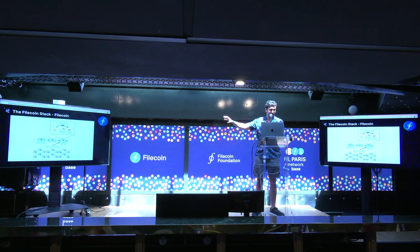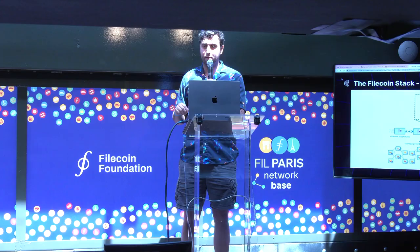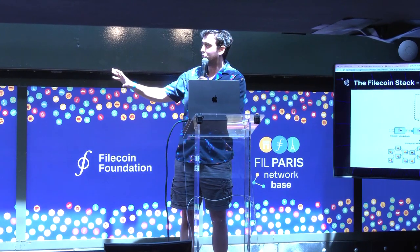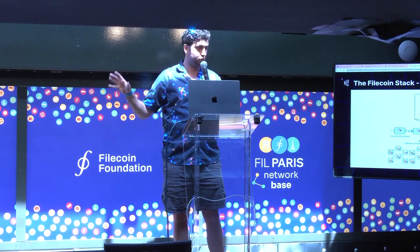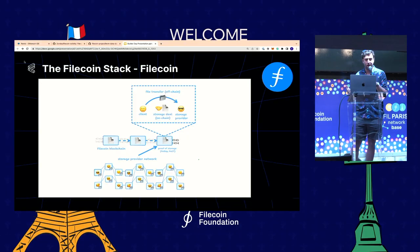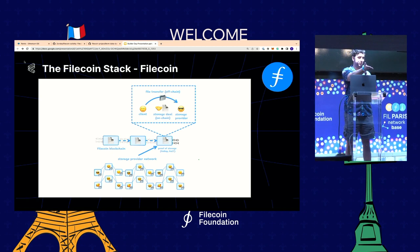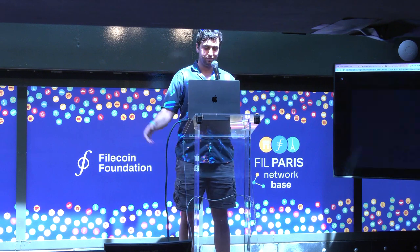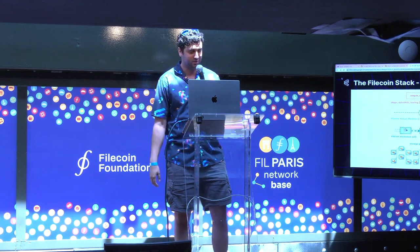On Filecoin, you can think of the blockchain as acting as a decentralized intermediary between clients who want their data stored permanently and storage providers willing to take on those storage deals. Computation in the FVM happens on the state of the blockchain — not directly with the data stored by storage providers. If you want to run computation with data stored by storage providers, you'd use a solution like Bacalhau or Lilypad — and we actually have Ali right here as a representative of that team, so there's a lot of synergy between these two projects.